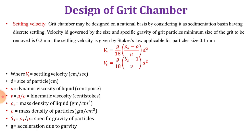The grit chamber may be designed on a rational basis by treating sedimentation as a discrete settling basin. Velocity is governed by the size and specific gravity of grit particles. The minimum size of grit to be removed is 0.2 mm. The settling velocity is given by Stokes' law, applicable for particle size of 0.1 mm: Vs = (G/18) × ((ρs − ρ)/μ) × d², which after rearranging becomes Vs = (G/18) × ((Ss − 1)/V) × d², where Vs is settling velocity in cm/s, d is particle size in cm, μ is dynamic viscosity in centipoise, and V is kinematic viscosity in centistokes.